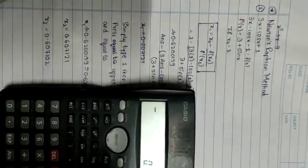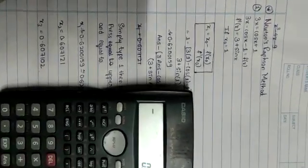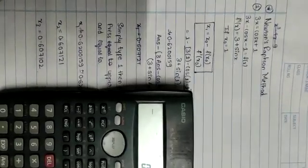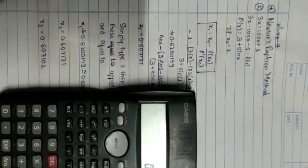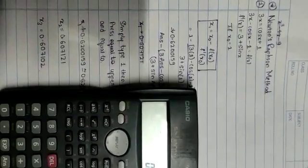The function is 3x minus cos x minus 1. We will differentiate this function, we will get 3 plus sin x. Considering x0 equal to 1,